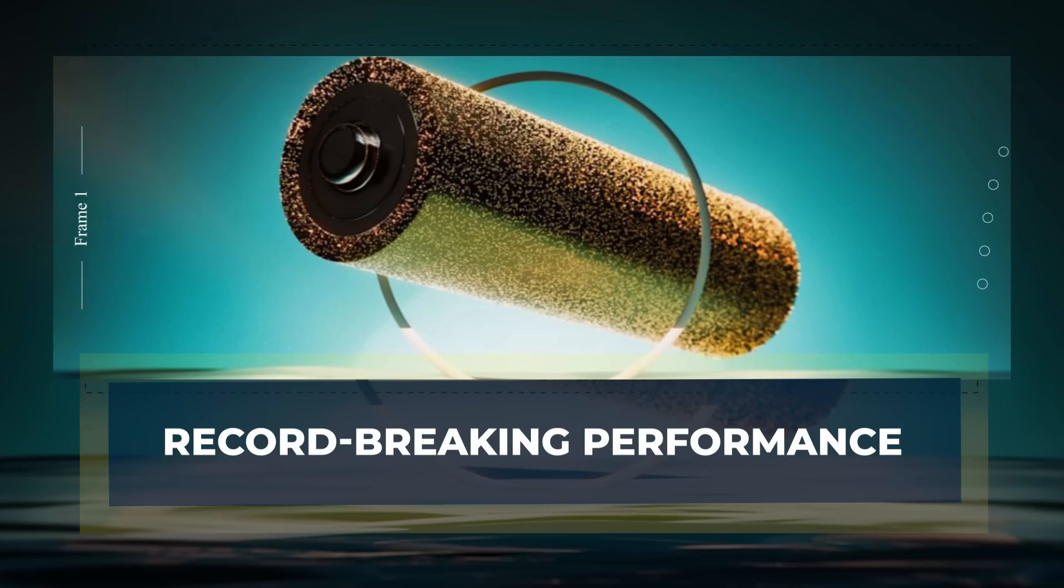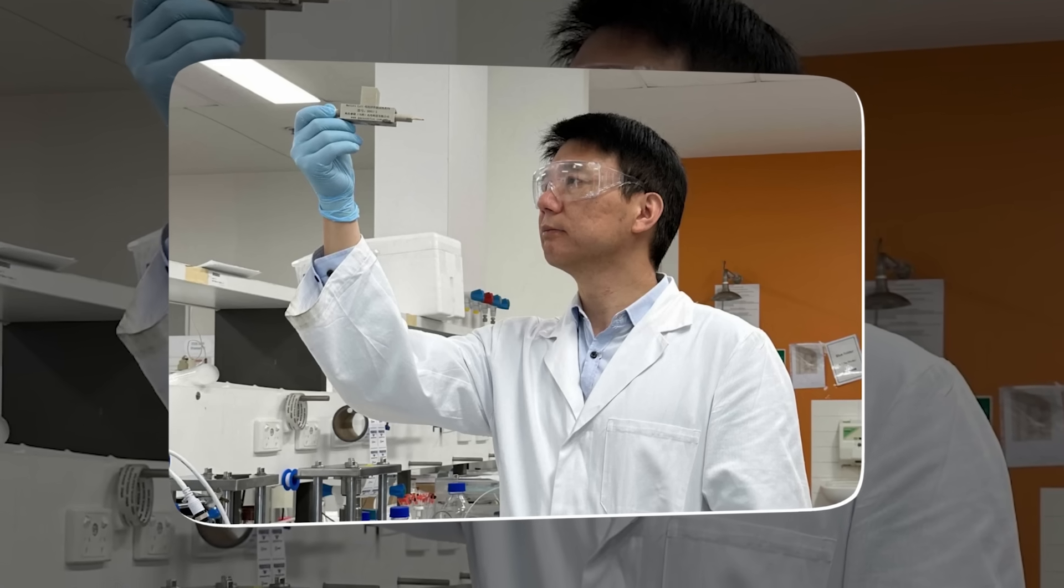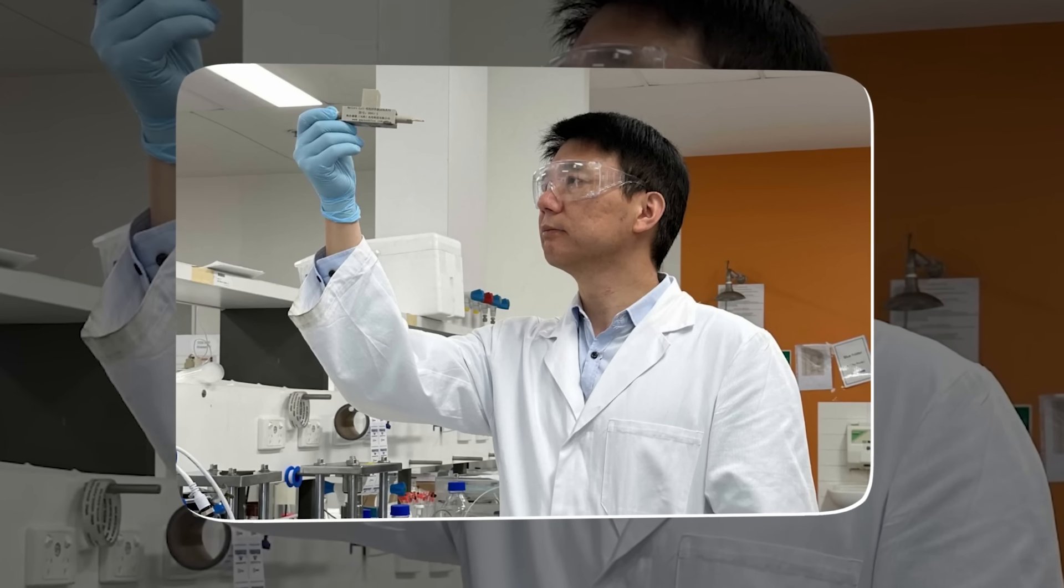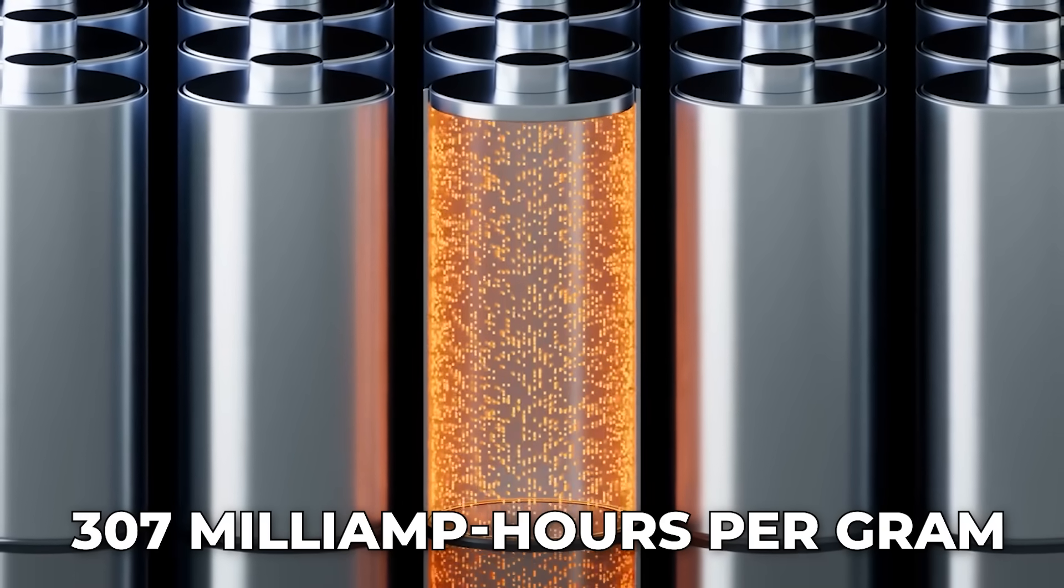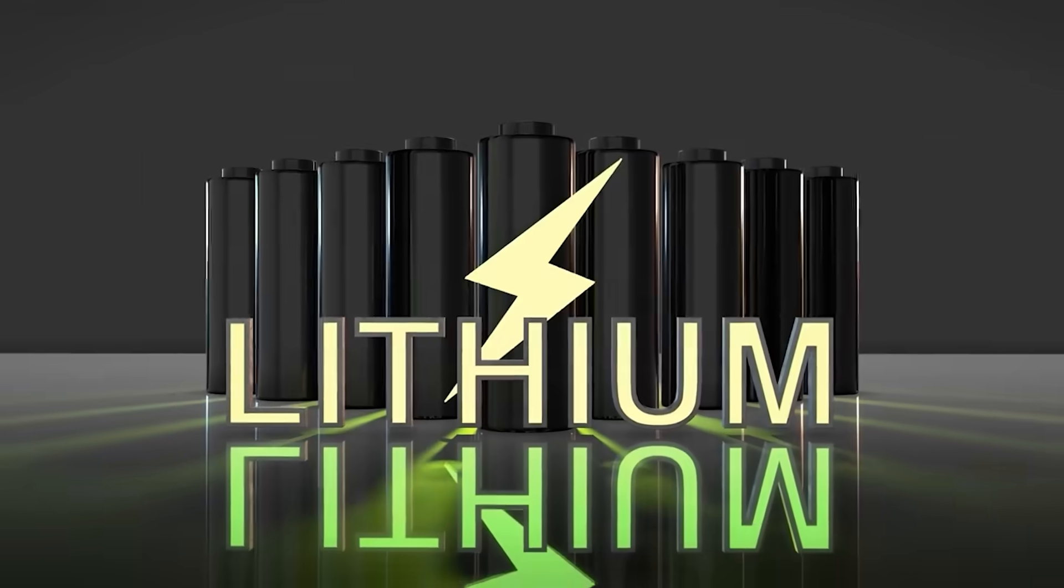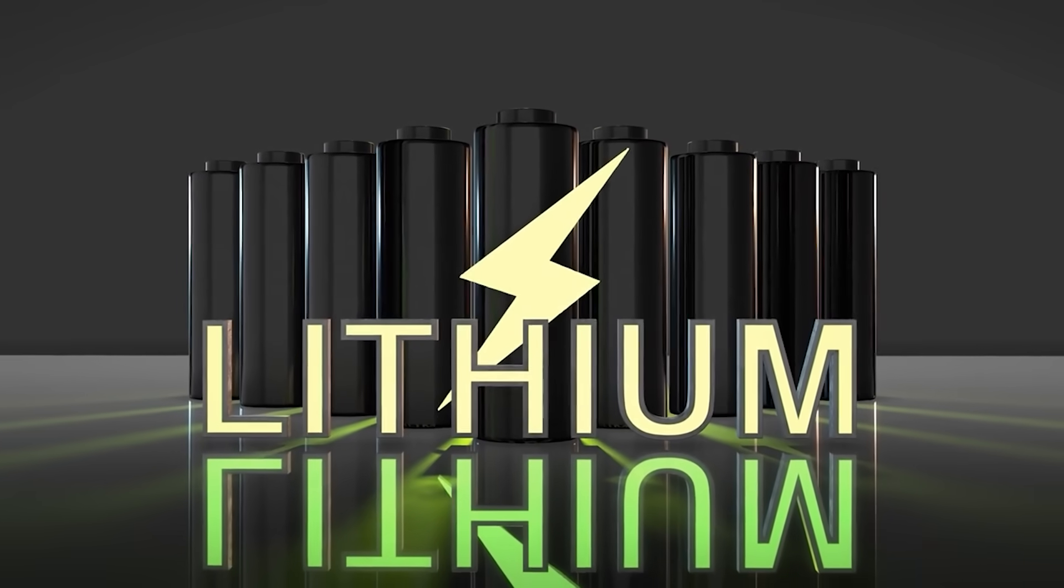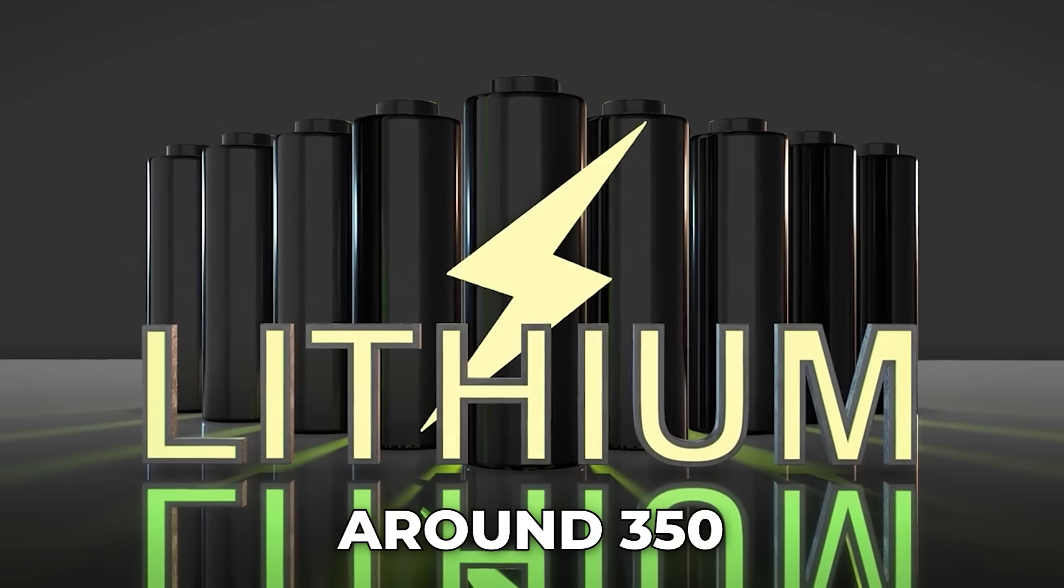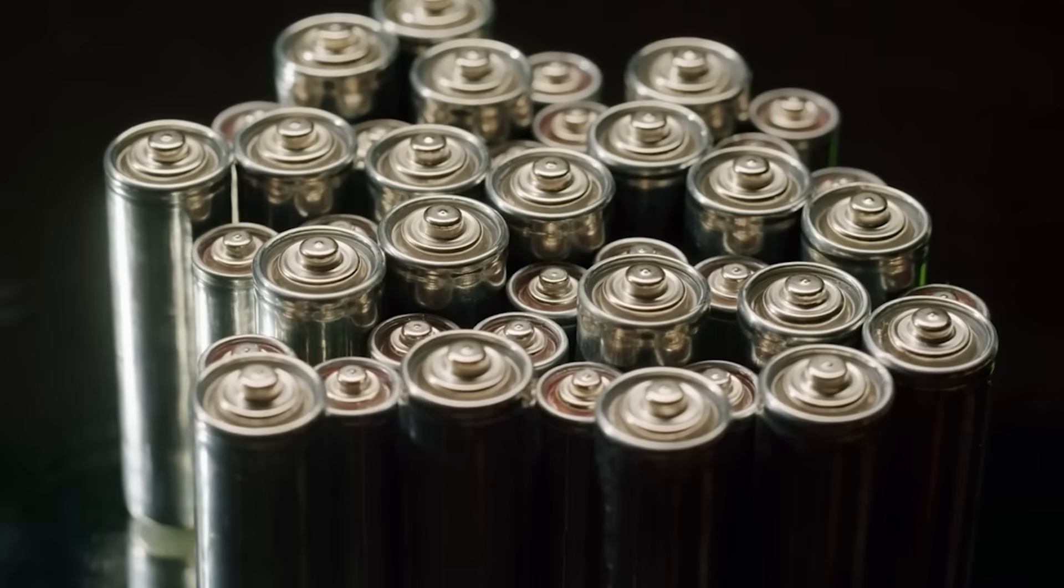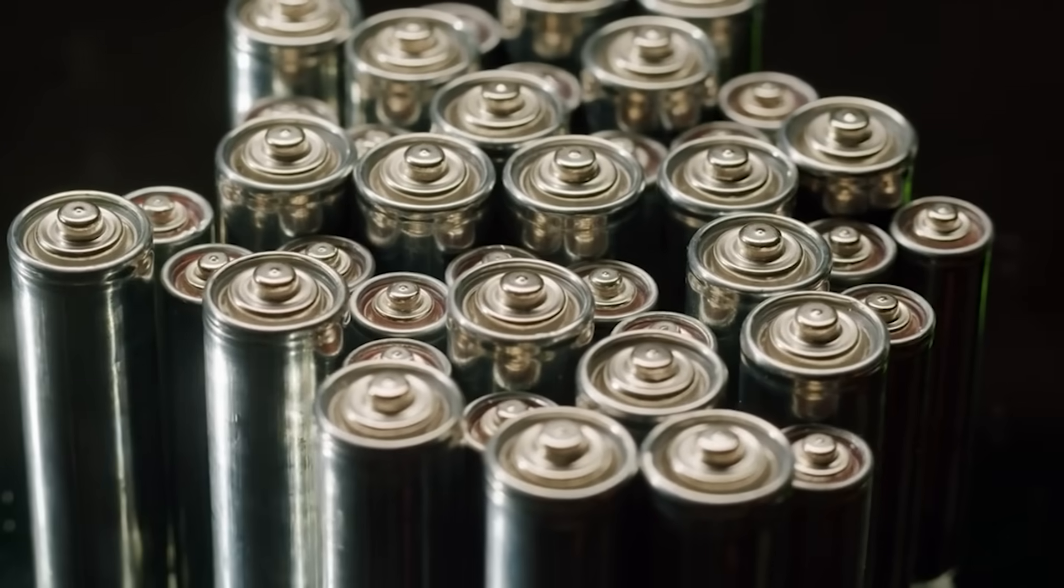Record Breaking Performance. The new proton battery developed at UNSW Sydney delivers impressive results. It achieved a specific capacity of 307 mAh per gram, almost as high as the graphite anode used in lithium-ion batteries, which delivers around 350. This means it can store nearly the same amount of charge per gram, despite using completely different chemistry.